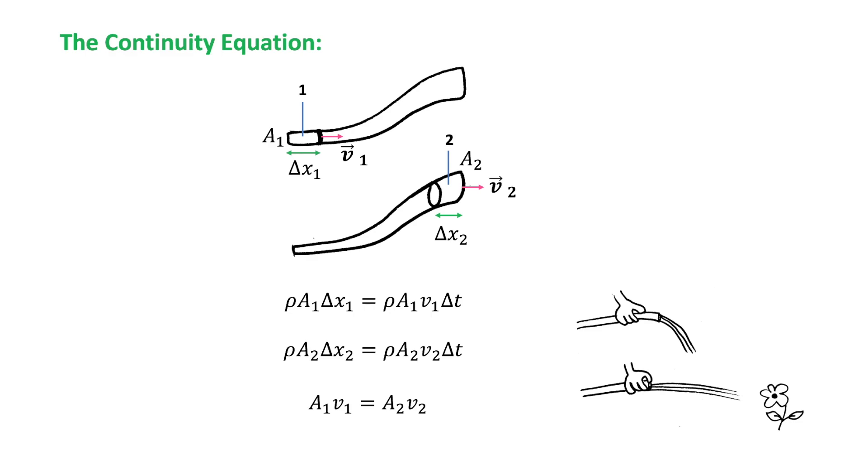So, now let's discuss the continuity equation. Consider an ideal fluid flowing in a pipe, with a changing cross-sectional area, in a steady flow. The mass of the fluid passing a certain point 1 at a certain time interval delta t must be equal to the mass that passes another point 2 in the same time interval.